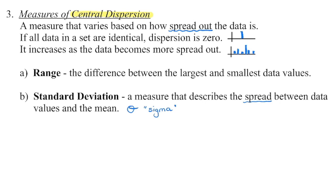Range is the difference between our highest value and our lowest value. So if one person got 90% and another got 20%, I have a range of 70%. If everybody in the class gets the same mark, I have a range of zero — there's no high and no low, everyone has the same. We say that's a dispersion of zero; there's no scattering of the data.